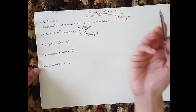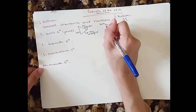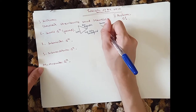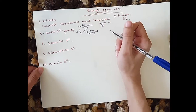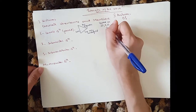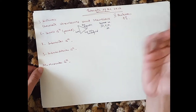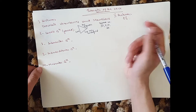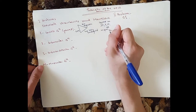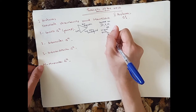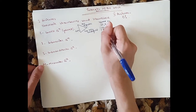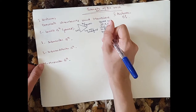Moving on to the contents of the carotid triangle: we've got the carotid arteries — the common, the external, and the internal. You've got the cervical branch of cranial nerve seven. You've got the vagus nerve, the accessory nerve, and the hypoglossal nerve. You've got several arteries like the superior thyroid, the ascending pharyngeal, the lingual, the facial, etc. You've also got the transverse cervical nerve and the internal jugular vein.